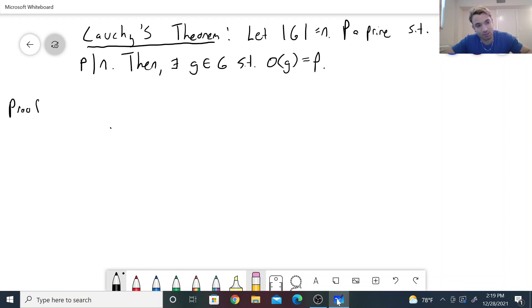So first we'll need to define a set S. Define S to be the collection of all p-tuples, (g_1, ..., g_p), where the g's come from the group such that the product of the g's is the identity element. So this is a nice set.